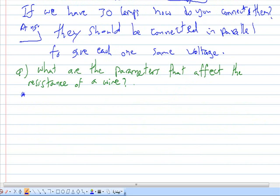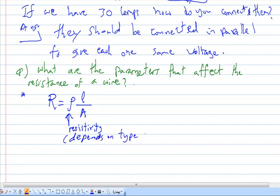Another question that might be asked is, what are the parameters that affect the resistance of wire? As we know, the resistance of a conductor is equal to rho multiply L over A. Rho is called the resistivity, and this depends on type of material and temperature. And it's constant as long as the temperature is constant.